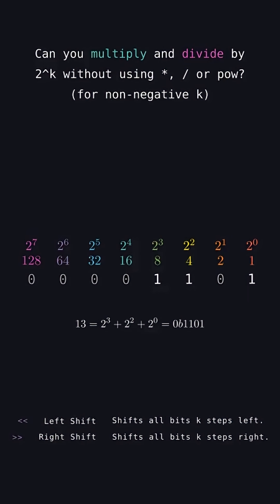Now suppose we multiply this by 2, we end up with 2 times 2 to the 3 plus 2 times 2 to the 2 plus 2 times 2 to the 0, which is 2 to the 4 plus 2 to the 3 plus 2 to the 1.